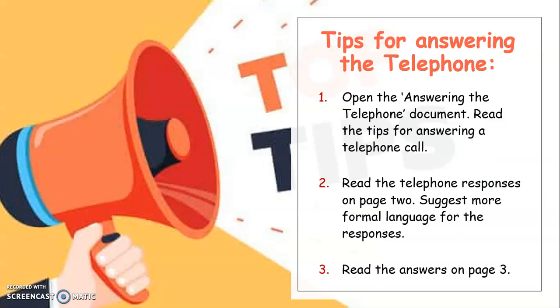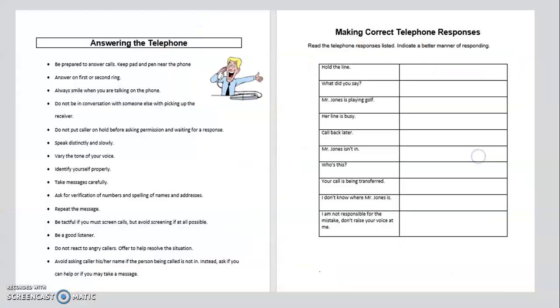Tips for answering the telephone. Open the answering the telephone document. Read the tips for answering a telephone call. Read the telephone responses on page two and suggest more formal language for the responses. Then read the answers on page three. This is that document. So these are some tips and these are the telephone responses but these are quite informal. So can you think maybe of a more formal way to say them? And then on page three of that document there are the answers. You can pause this video here while you complete that exercise.